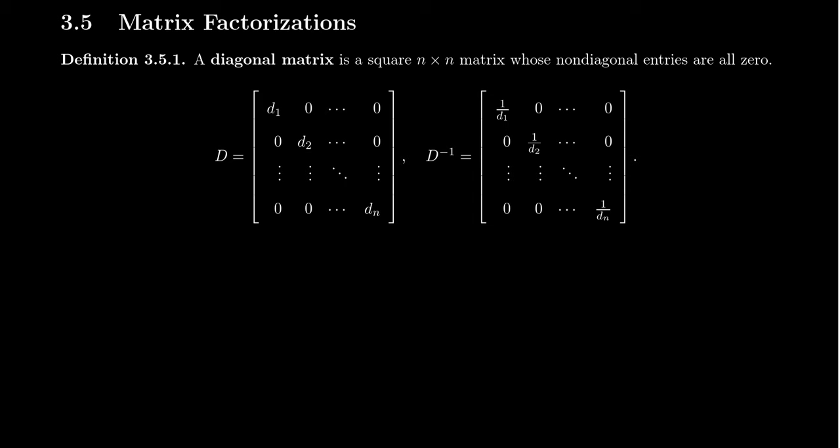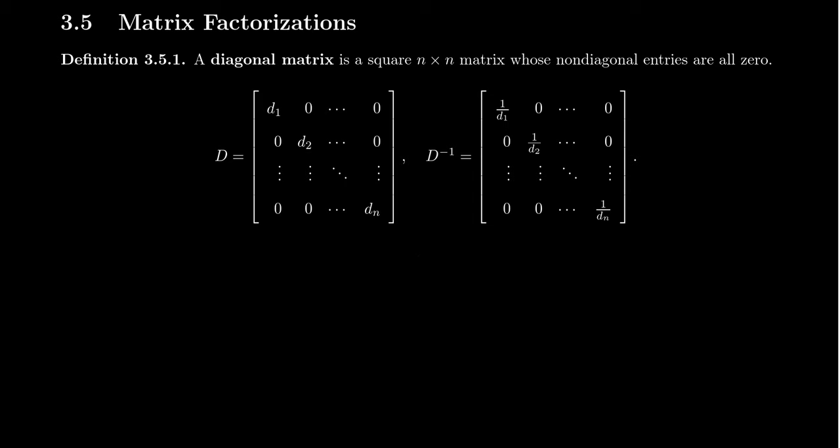Every diagonal matrix can be factored as a product of elementary matrices of scaling type — again, if we allow zero scaling. For example, the matrix diag(1, 1, 0) is one where you would scale the third row by zero. While that's not strictly an elementary matrix, if we allow that singular scaling example, then every diagonal matrix can be factored as a product of scaling elementary matrices. We can view diagonal matrices as their generalization — scaling elementary matrices 2.0, where we just squish them all together.